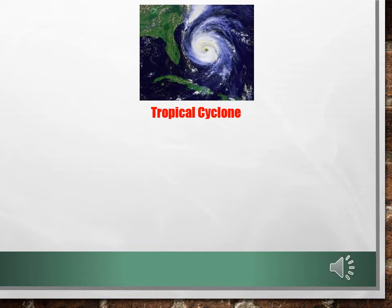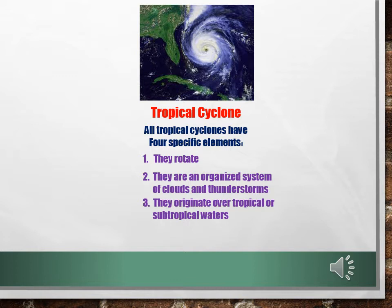How do you know if you're looking at a tropical cyclone? It's easy. All tropical cyclones have four specific elements: they rotate, they are an organized system of clouds and thunderstorms, they originate over tropical or subtropical waters, and they have closed, low-level circulation. If you can prove those four elements, you have a tropical cyclone.